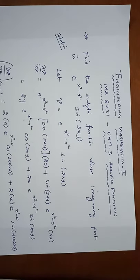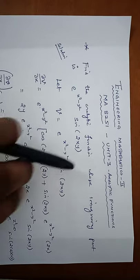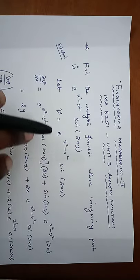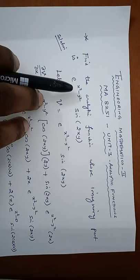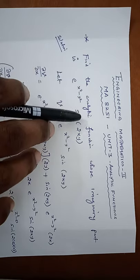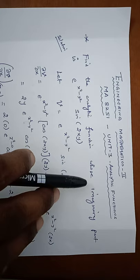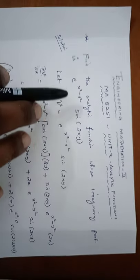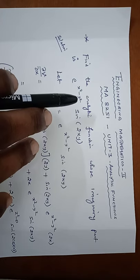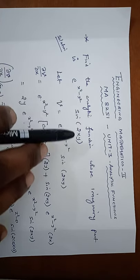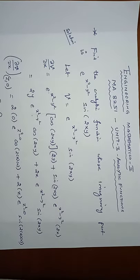Engineering Mathematics 2, MA8251, Unit 3: Analytic Functions. This is an important question: Find the analytic function whose imaginary part is e^(x²−y²) · sin(2xy). This is the statement of the problem.